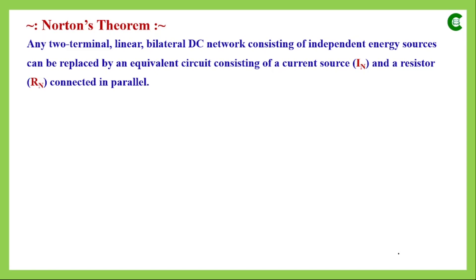The statement of Norton's theorem says that any two terminal linear bilateral DC network consisting of independent energy sources can be replaced by an equivalent circuit consisting of a current source IN and a resistor RN connected in parallel. The statements of Norton's and Thevenin's theorems are essentially the same — both applicable for two terminal linear bilateral networks, including AC networks, and with both independent and dependent sources. The only difference is that here the rest of the circuit is represented by a single current source instead of a voltage source.